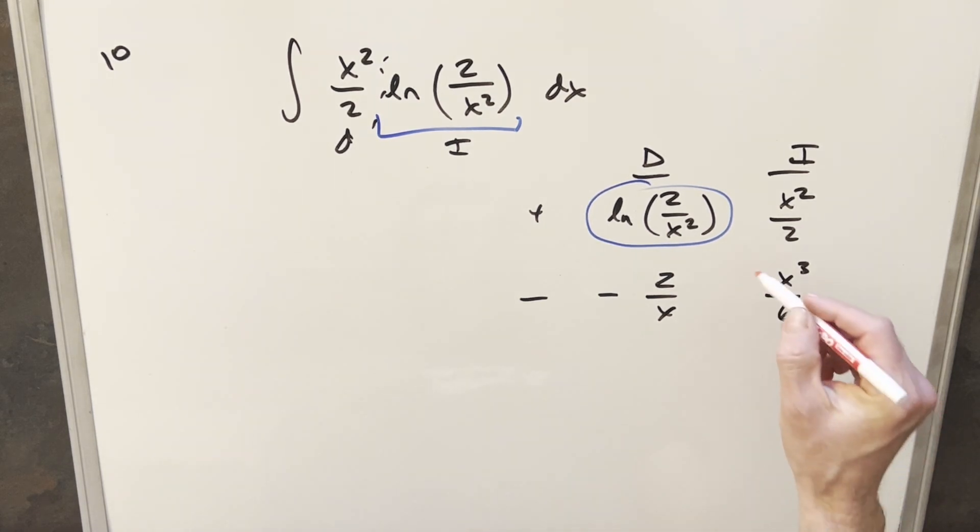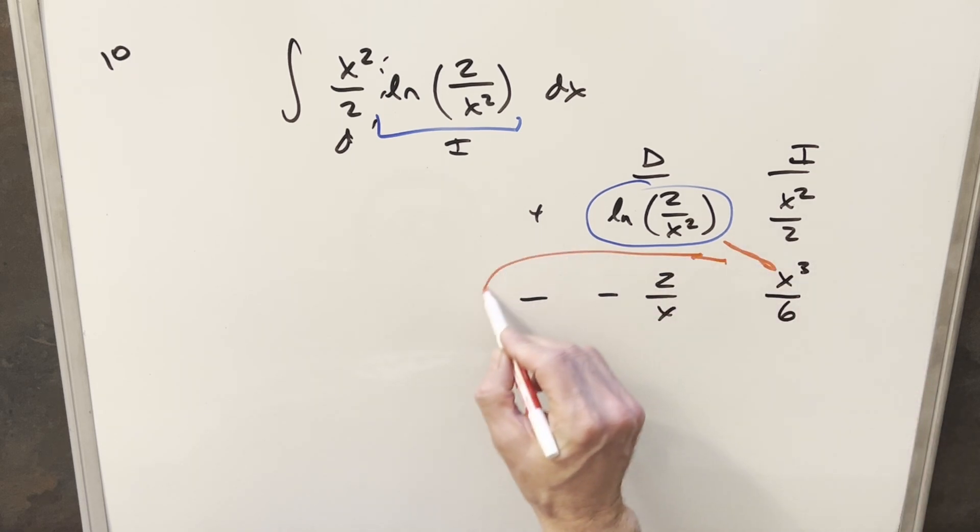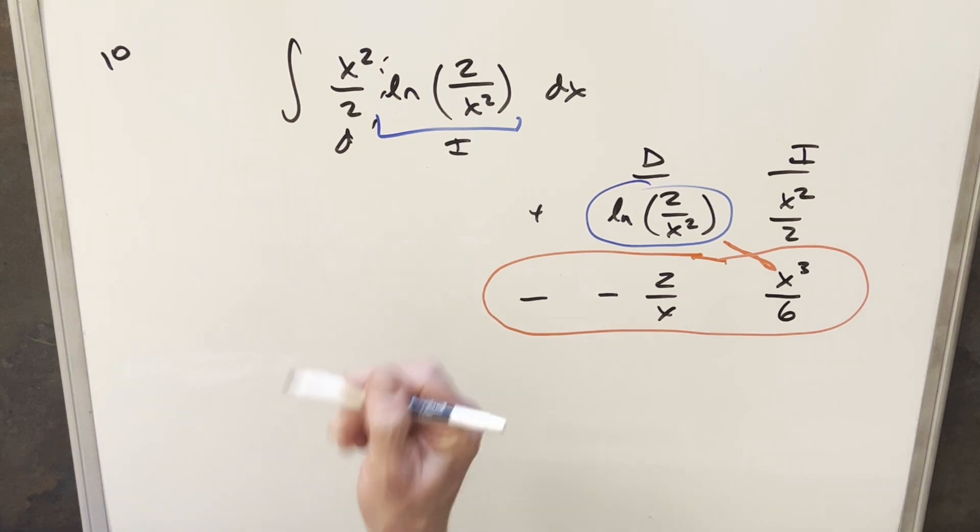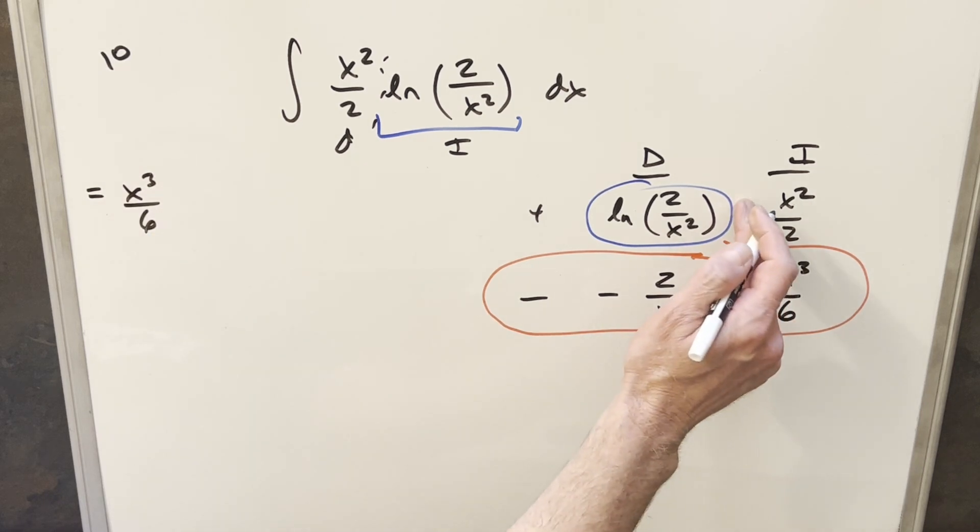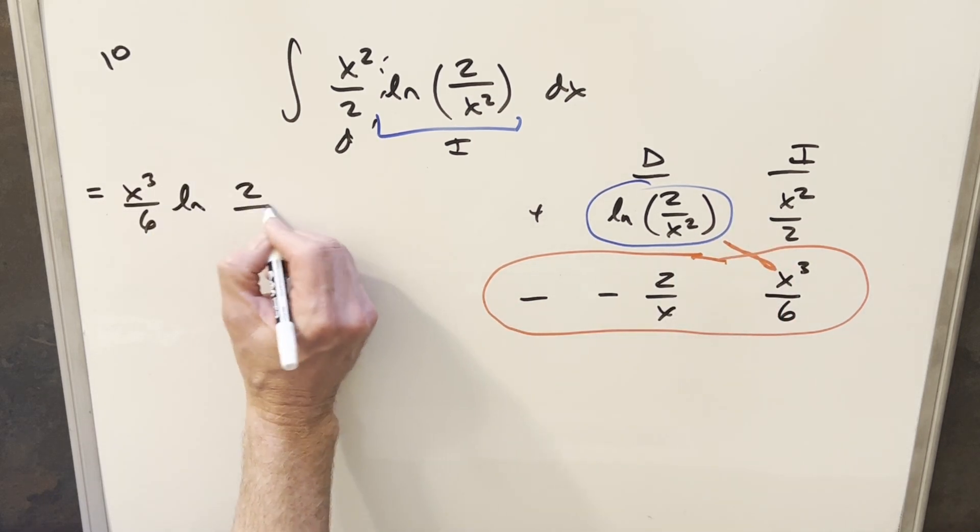So from here, what's going to happen is we're going to have part of our solution right here on the diagonal. And then this last row here, this is all going to be an integral. So let's see if we can put this all together and write this down. So we'll have part of the solution as x cubed over 6 times natural log 2 over x squared.